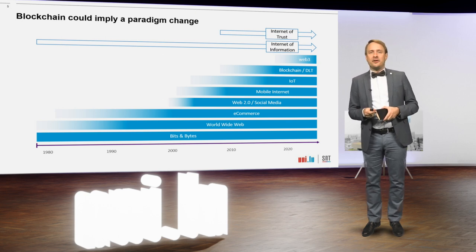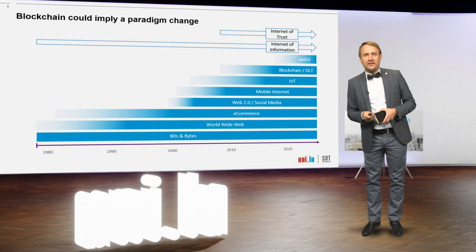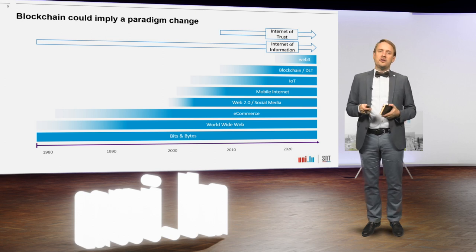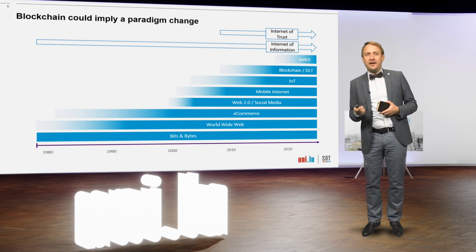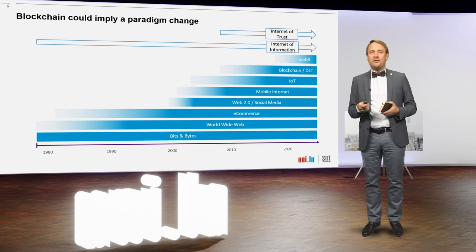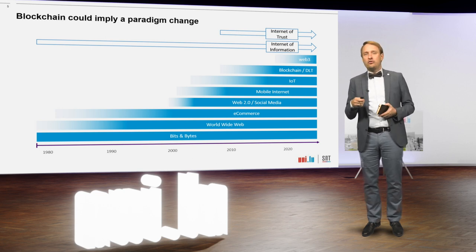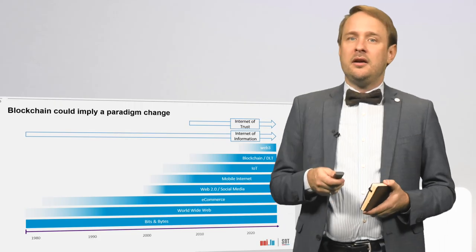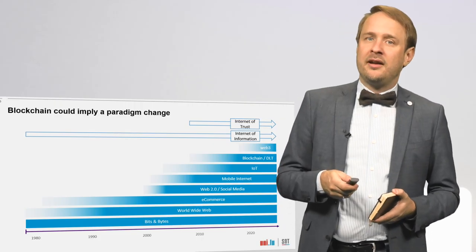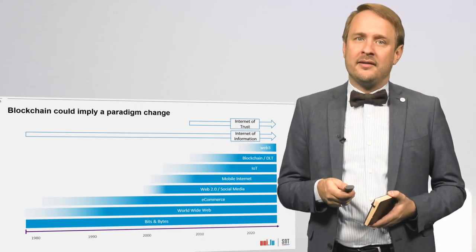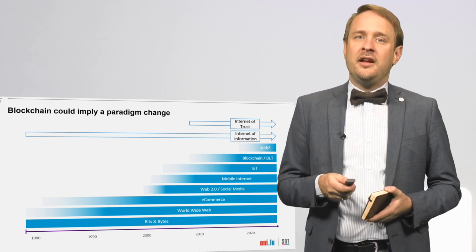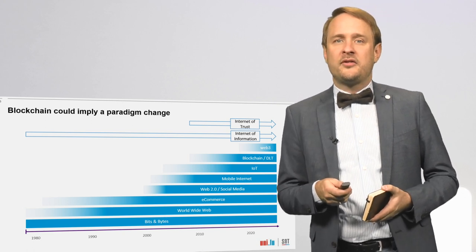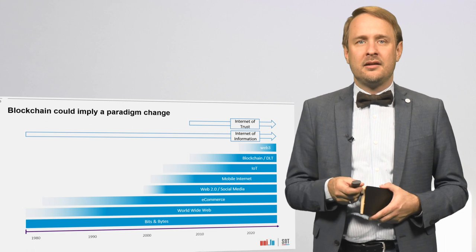To make a monetary transaction on the internet, you need to go through a trusted third party — you need to go to a bank and give them the information to transfer money from A to B. The blockchain now creates another layer on the internet: a layer of trust. The Internet of Trust is then called Web3.